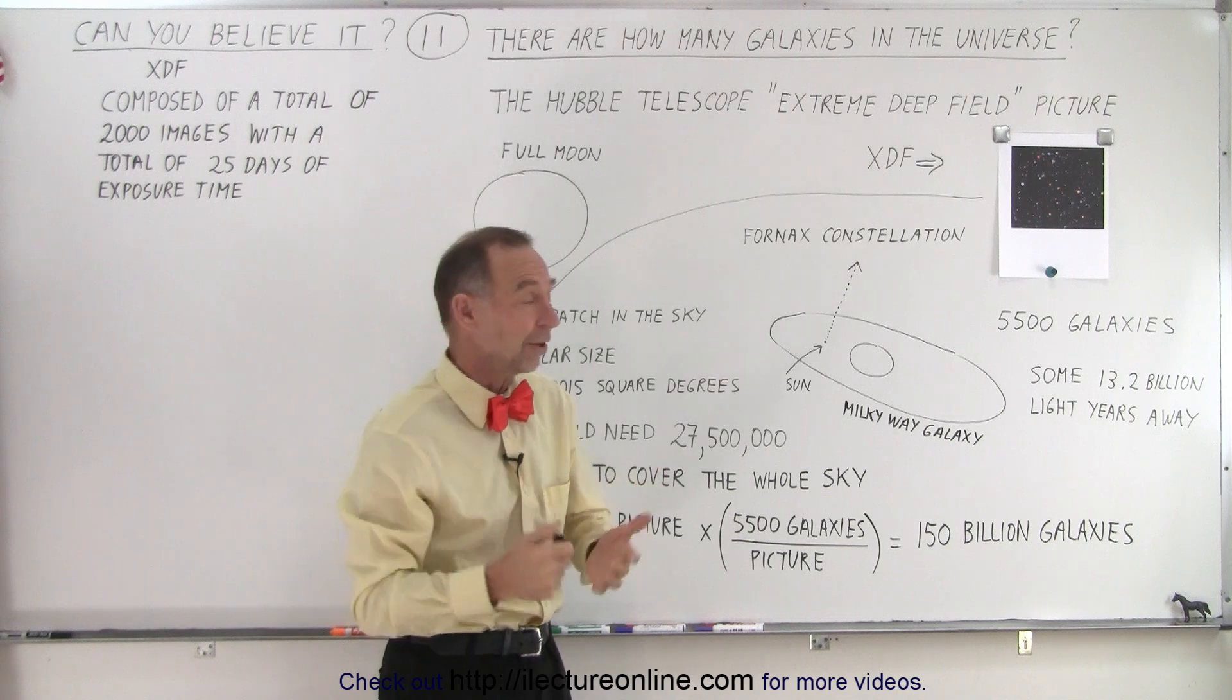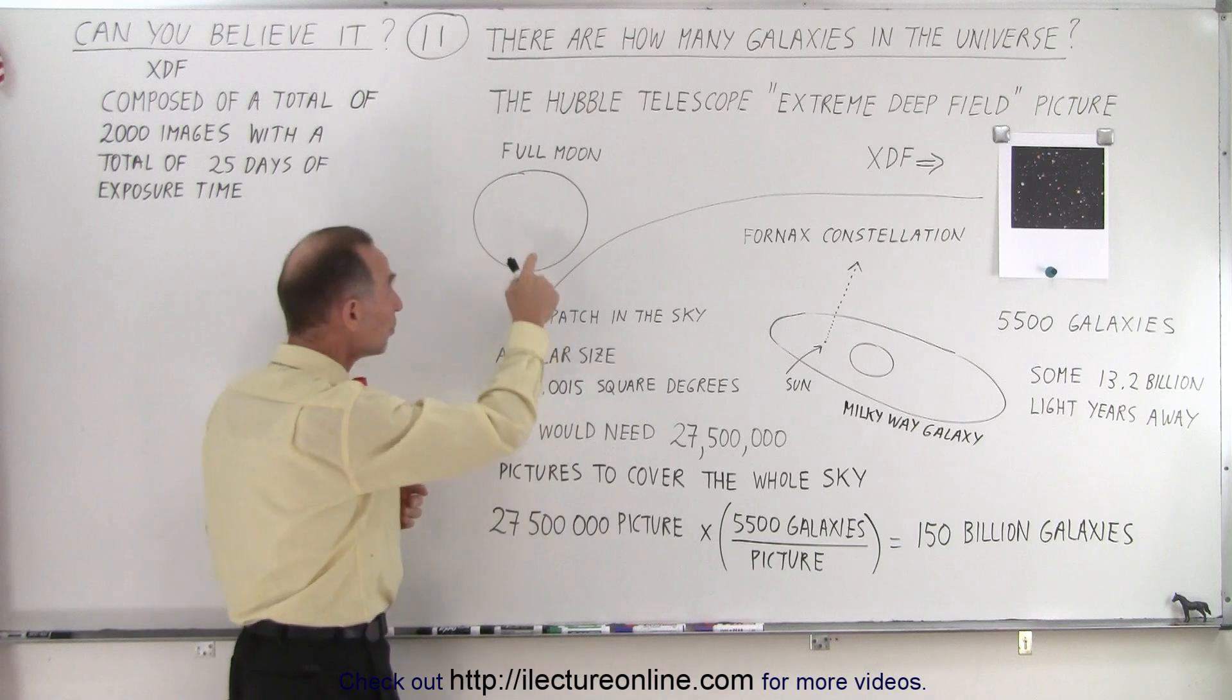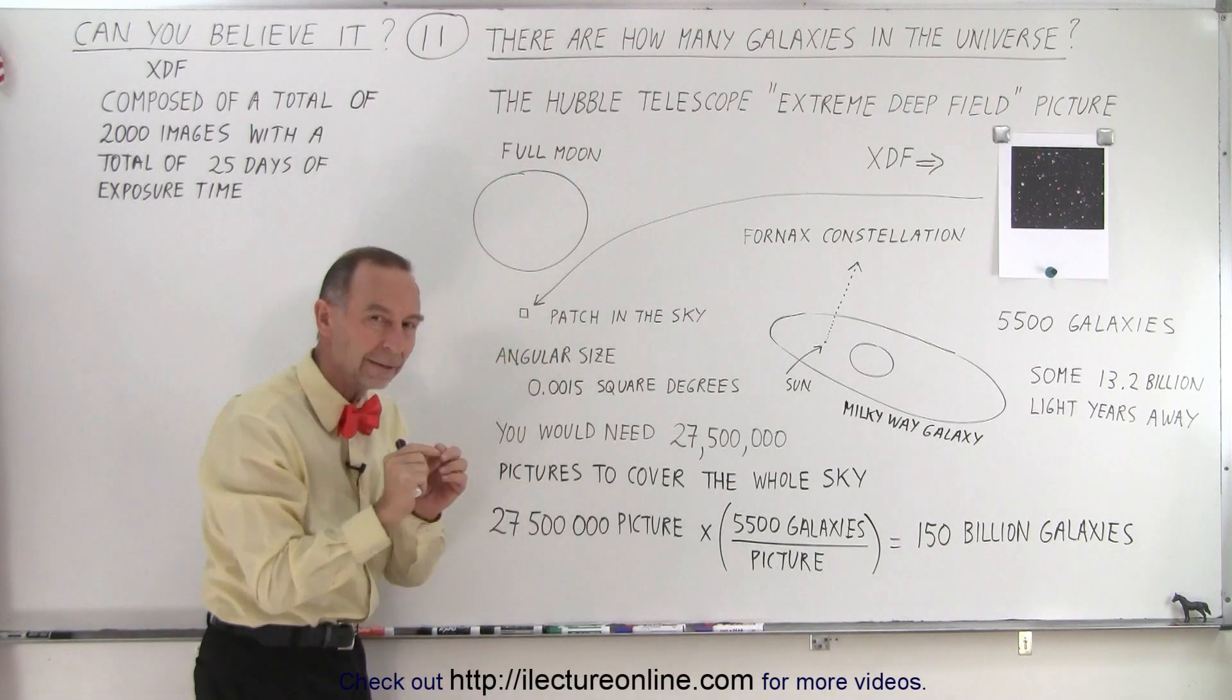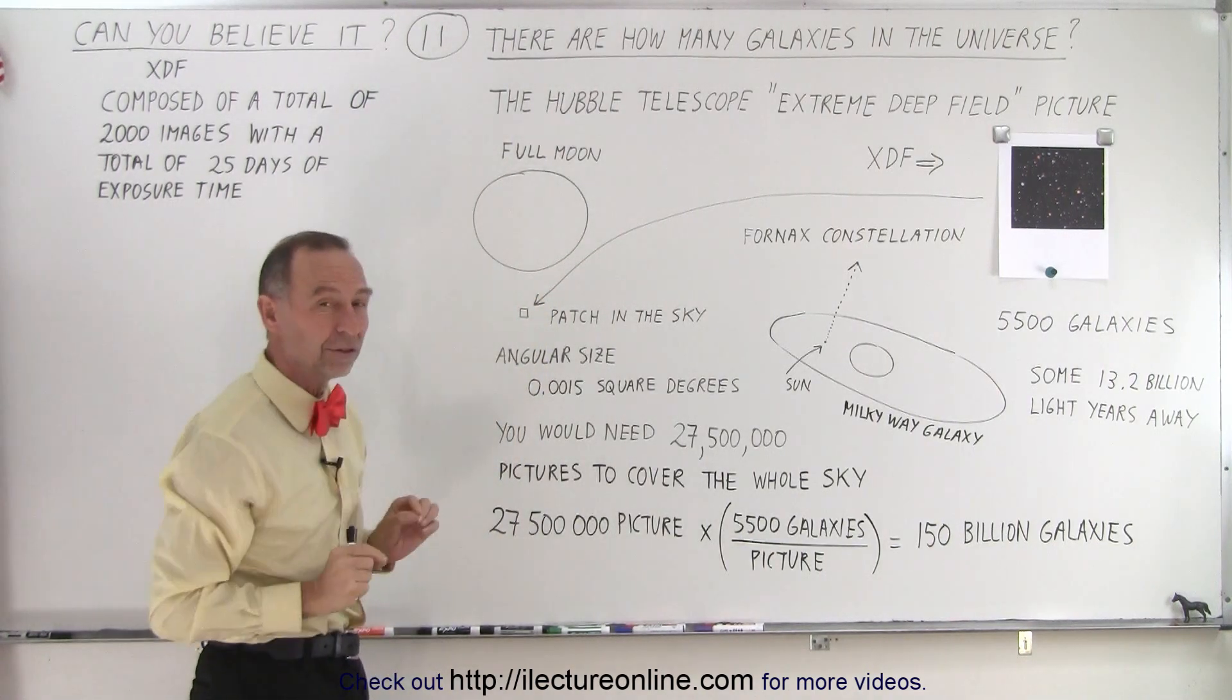They counted them, and that's how many there were. Now, how big was that picture? Well, compared to the full moon right here, this is about the patch that was covered in the sky. So you can see it's a very tiny portion of the full moon, a very tiny portion of the sky.